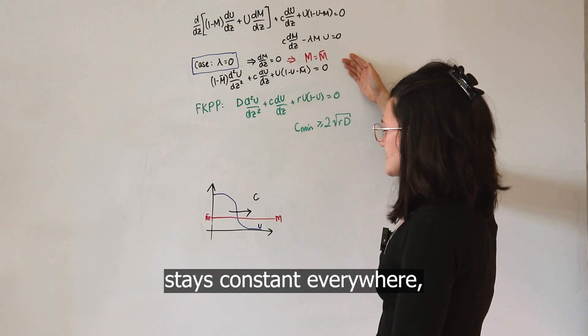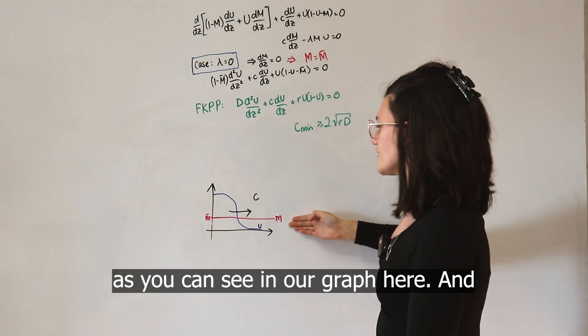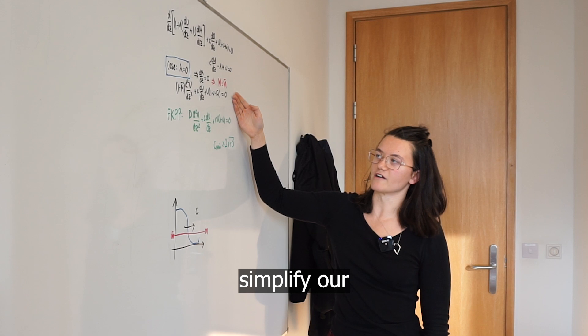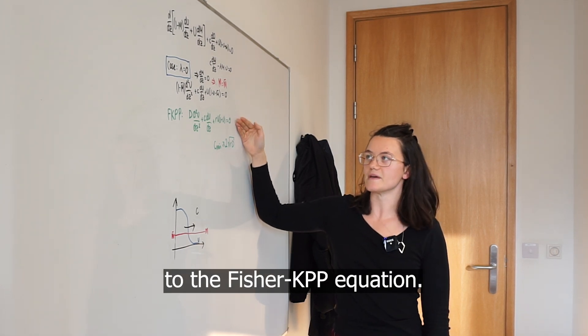What we find is that the extracellular matrix stays constant everywhere, as you can see in our graph here. And when I simplify our equation, it looks very similar to the Fisher-KPP equation.